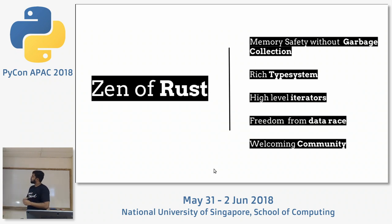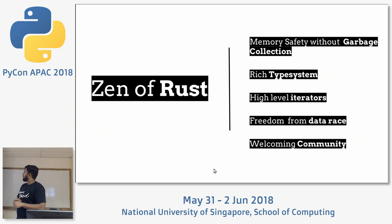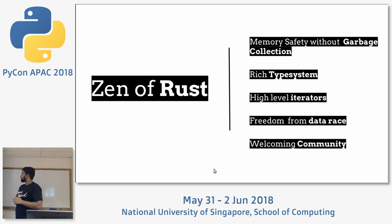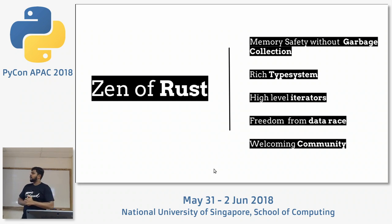The Zen of Rust is very simple. You have memory safety without garbage collection, achieved through a concept called ownership and borrowing, where you destruct objects deterministically. It has a rich type system, it's an expression-based language, it has all these high-level iterators, and it gives you freedom from data races through ownership and borrowing. And it has a welcoming community — just like the Python community — with an ecosystem that's building with many new packages coming out.